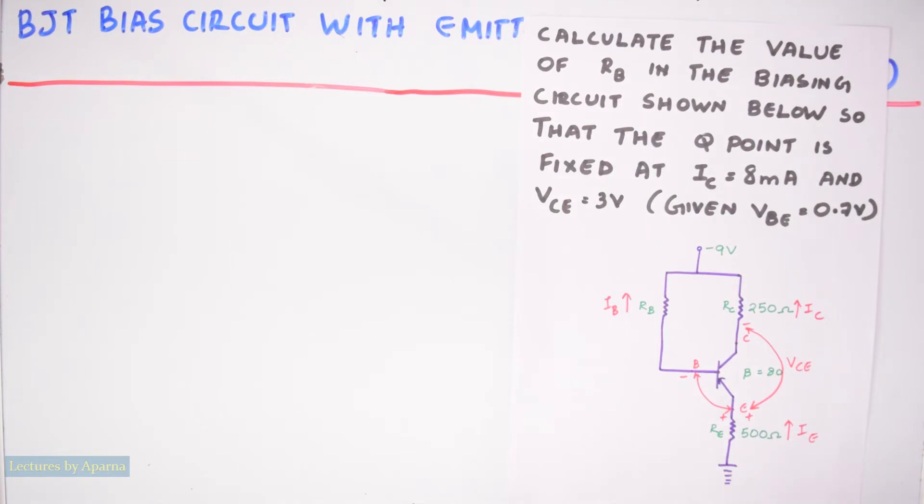Now let us consider the input section and write the loop equation using KVL or Kirchhoff's voltage law. KVL says that the algebraic sum of voltages in a loop will be equal to 0.